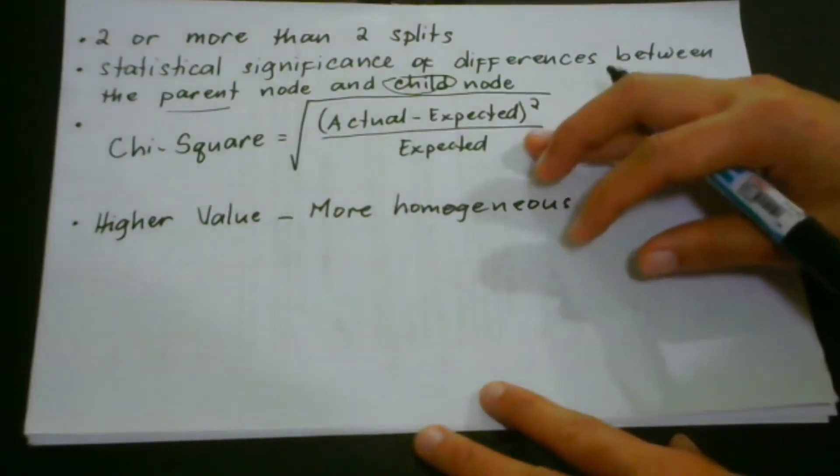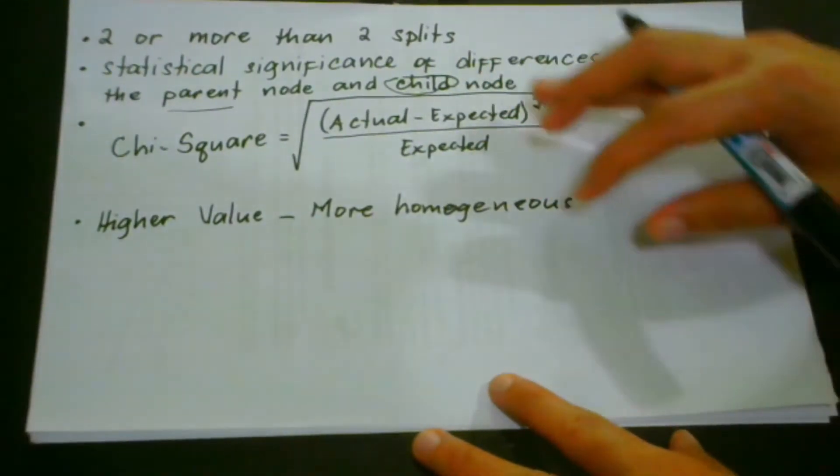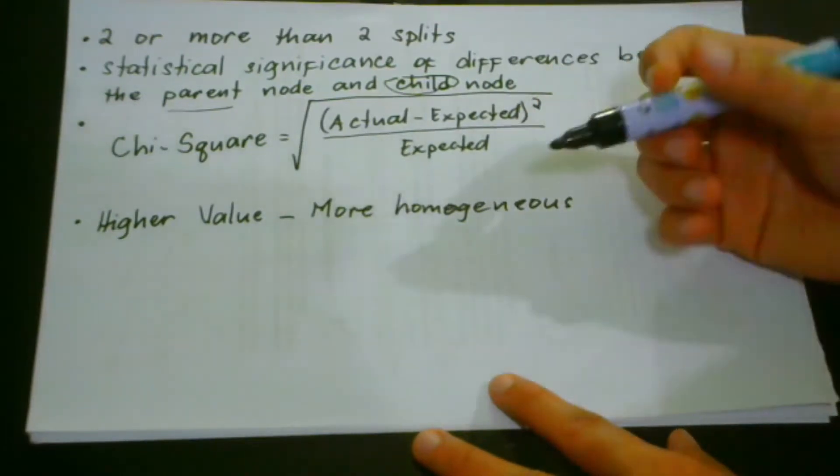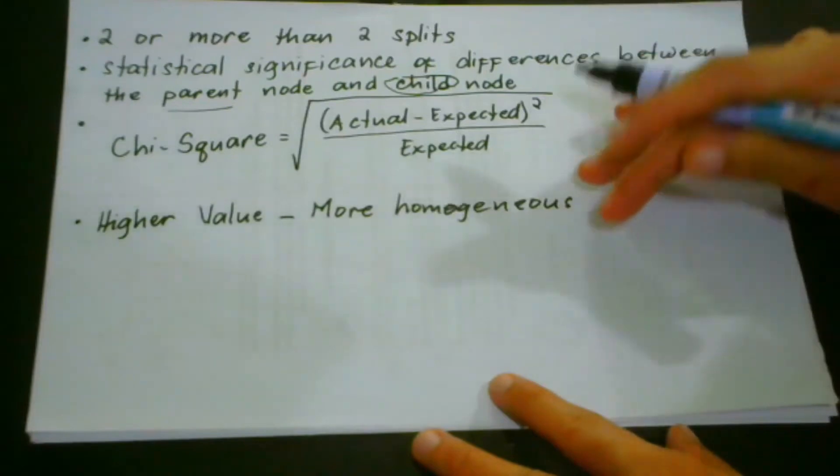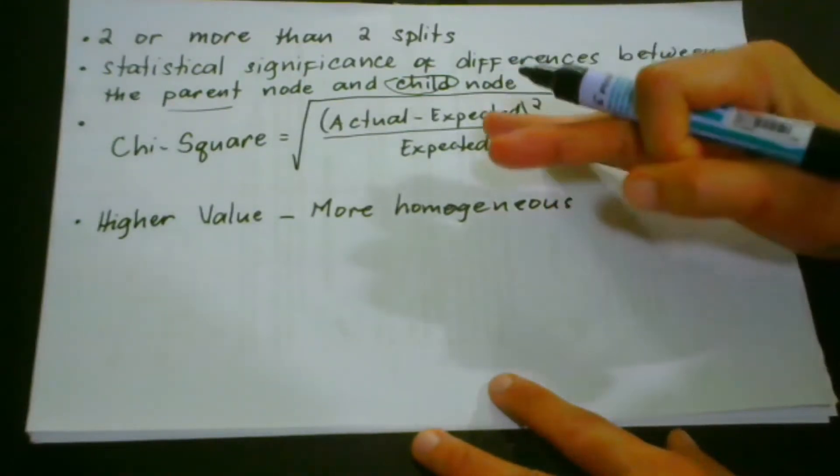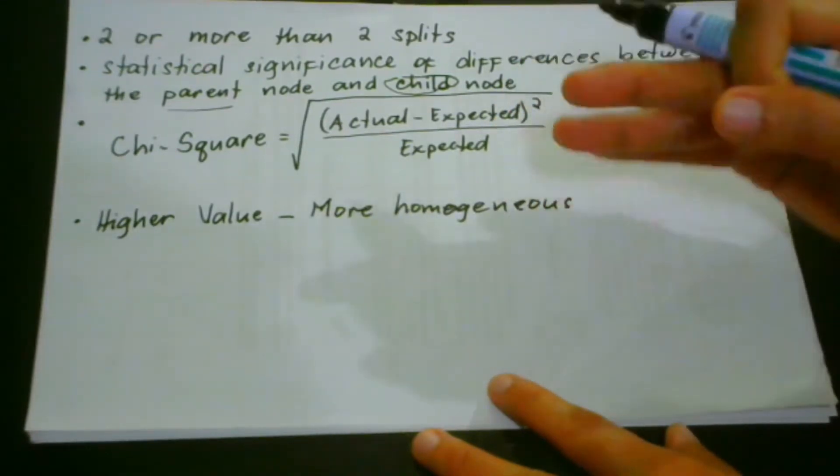At this time, what we will have is the calculation of the chi-square. So in most cases, we may not be dealing with only two splits because we may be working with a dataset that contains a lot of variables, and with that, the three methods that we have already taken up may not be applicable.